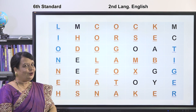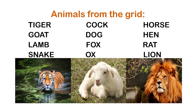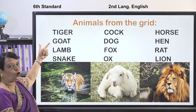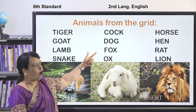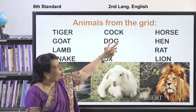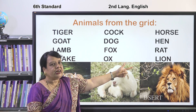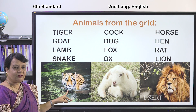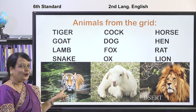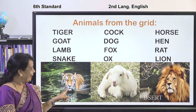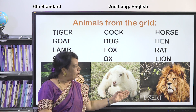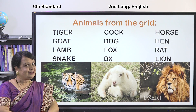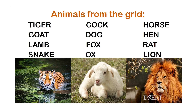Animals from the grid: tiger, goat, lamb, snake, cock, dog, fox, ox, horse, hen, rat, lion. Can you see this? It is a tiger — our national animal. And this is a lamb, and this is a lion.